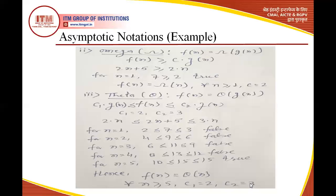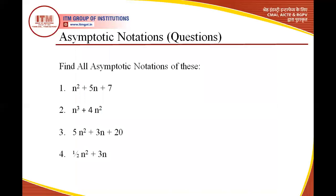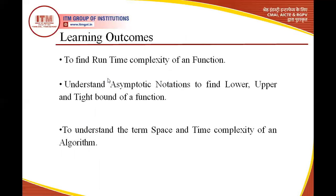This is the whole thing of asymptotic notation. We have taken one function as an example. You can take another function and find the asymptotic notations for practice. Some questions are given: for the function n² + 5n + 7, find all asymptotic notations — Big O, Omega, and Theta — and determine the running time.